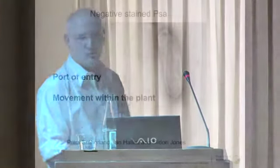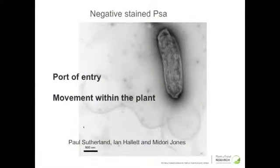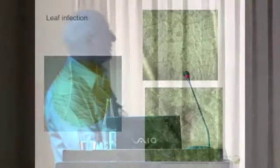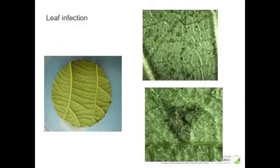Now I'm going to look at ports of entry and movement of PSA within the plant, with some electron microscopy images. This is PSA — the bacteria — showing beautiful flagella. Looking at leaf inoculation: this is a leaf that was inoculated. One of the first symptoms you will see is this discoloration — we call it water soak. It looks like it is full of water. That is one of the first symptoms seen after inoculation.